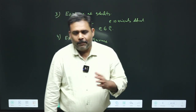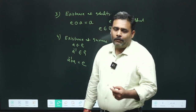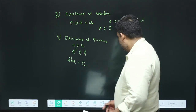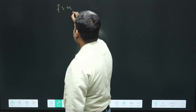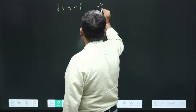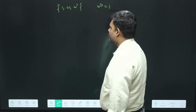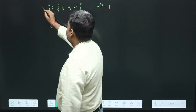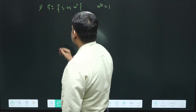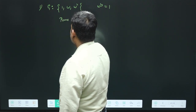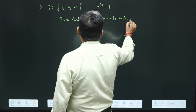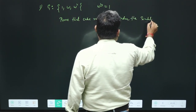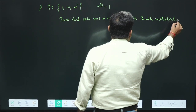A group may be Abelian or non-Abelian. In the next video, we will solve two problems. The first question is: prove that the cube roots of unity — 1, ω, and ω² (where ω³ = 1) — under simple multiplication form an Abelian group.